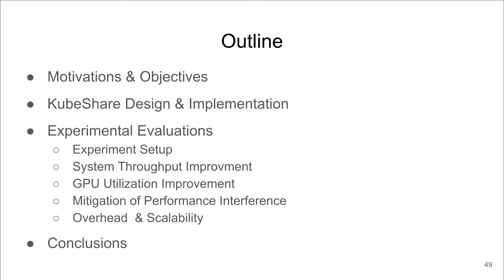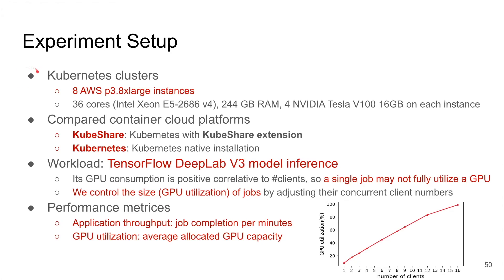In the last part of the talk, we present evaluation results. Our evaluations were conducted on an AWS public cloud cluster with a total of 8 GPU nodes and 32 GPUs. We compare results between two Kubernetes platforms: one with our KubeShare extension and one without. The workload is a TensorFlow inference job whose GPU resource consumption can be controlled by adjusting the number of clients. The main performance metrics are application throughput and GPU utilization.